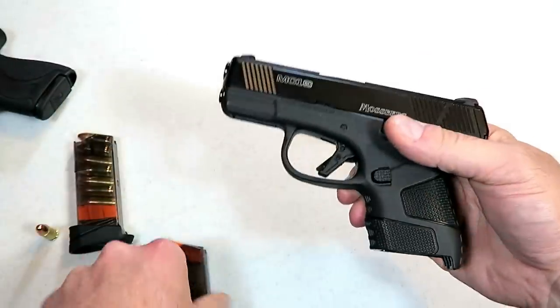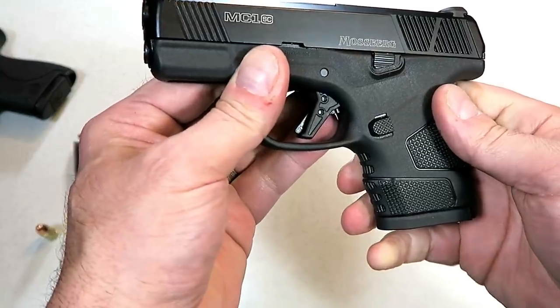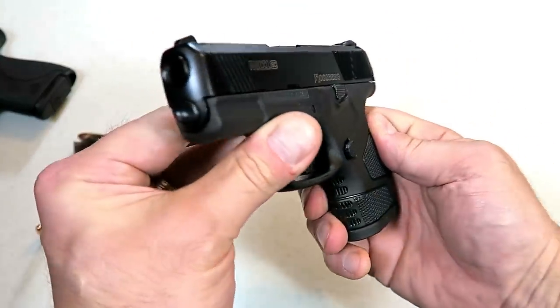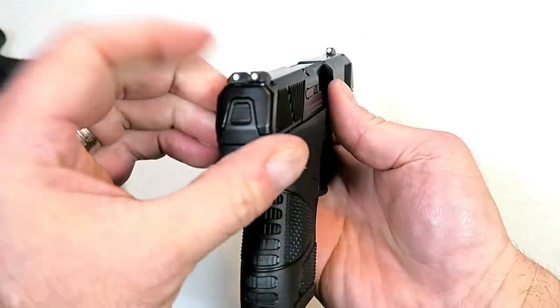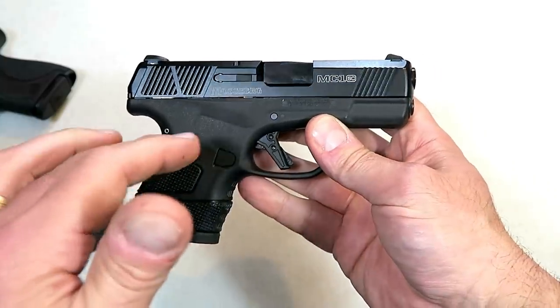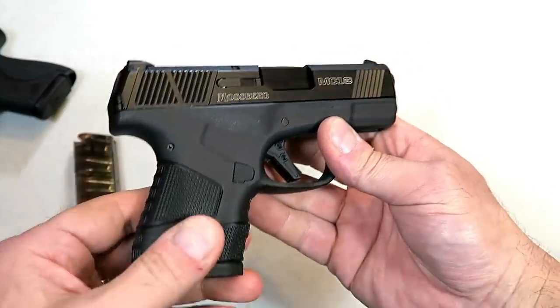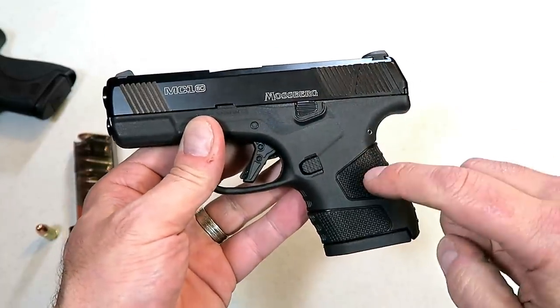So here it is. Mossberg MC1 subcompact, single stack, 9mm handgun. It does have three dot metal sights, and they didn't cheap out on it. I will give them that. They did not cheap out on it, and I think they came up with a pretty decent handgun. We will see how well it does.